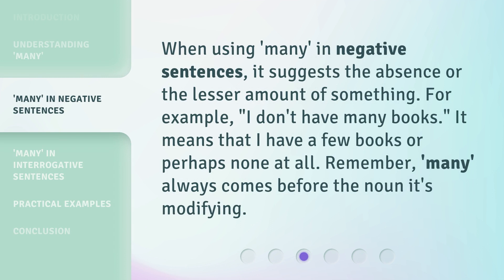When using 'many' in negative sentences, it suggests the absence or the lesser amount of something. For example, 'I don't have many books.' It means that I have a few books, or perhaps none at all. Remember, 'many' always comes before the noun it's modifying.